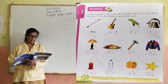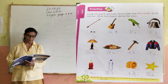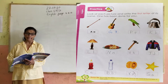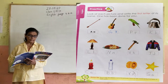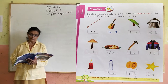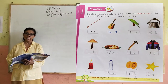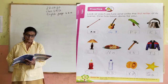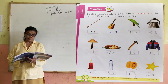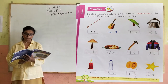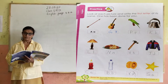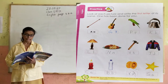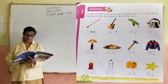Next picture is Lamb. First letter of Lamb is L. Next picture is Nats. Nats make first letter N. Next picture is Hamar. Hamar. The first letter is H.